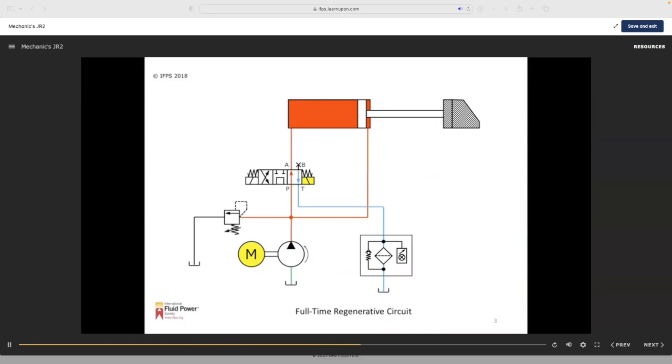However, only half the normal tonnage extension can be generated. Retraction speed and force are the same as standard non-regen circuits. Regen circuits like these only work on extension.